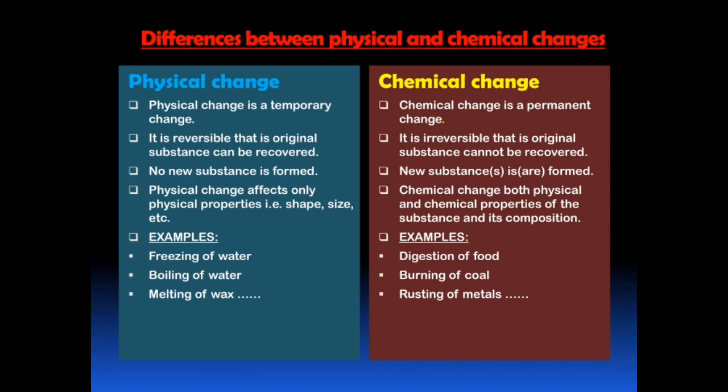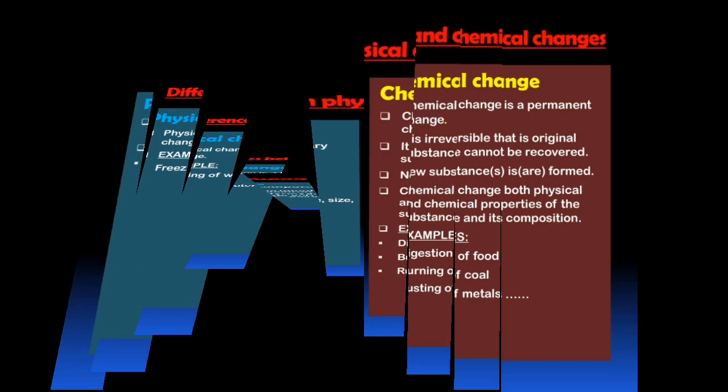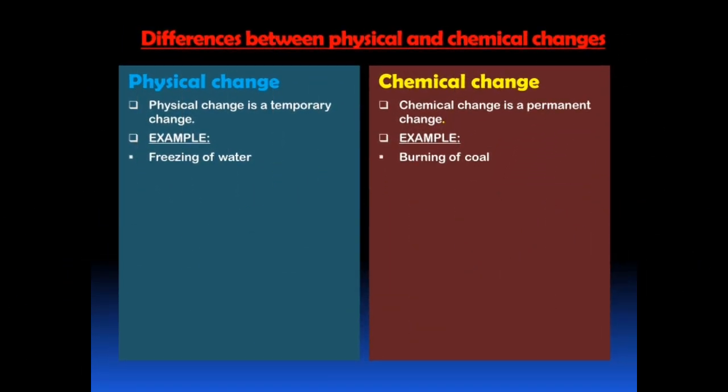Differences between physical and chemical changes. Here we have mentioned 4 major differences along with examples. The first difference: a physical change is a temporary change whereas a chemical change is a permanent change. That means, once one substance changes to another substance, if it was a physical change, we can get the original substance again.